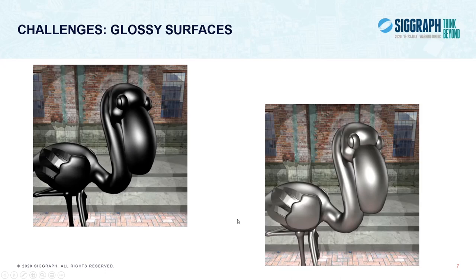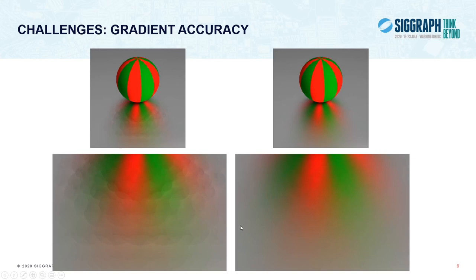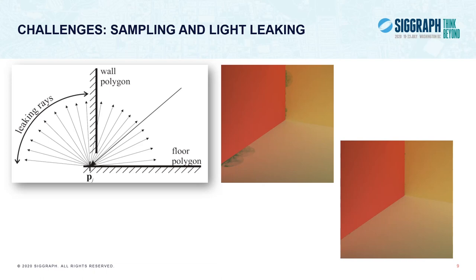That was the state of the art when we started our PhDs. The first thing Jaroslav was working on is what to do with glossy surfaces. If we don't simulate GI at all, we end up with only direct lighting that really does not give a good idea of the material properties. If we want to reuse ideas from irradiance caching for glossy surfaces, we will have to look at gradients because indirect lighting may change slowly or not on the surfaces depending on the glossiness. There was also a significant robustness problem in irradiance caching: errors in sampling and light leaking.